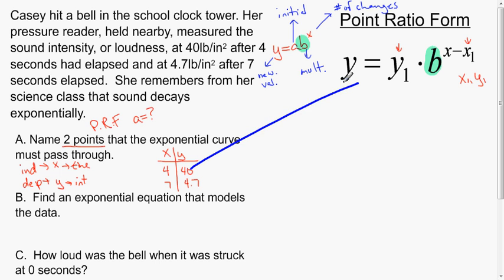I'm going to take these values and plug them into this formula twice. That is going to give me in the first instance y equals 40 times b to the x minus 4, and in the second instance it's going to give me y equals 4.7 times b to the x minus 7.